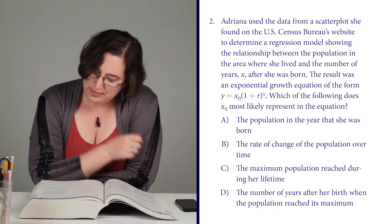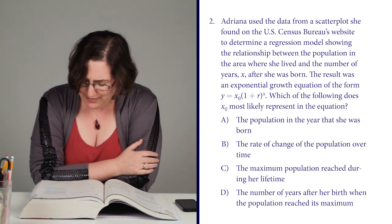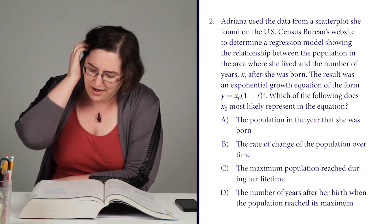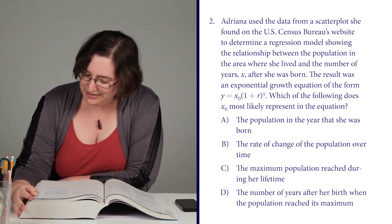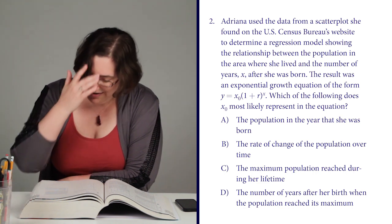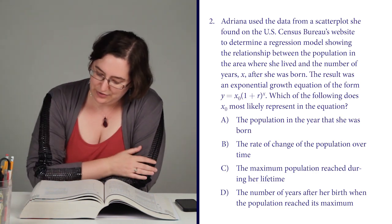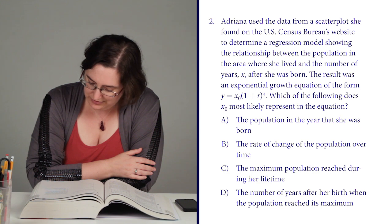Adriana used the data from a scatterplot she found on the U.S. Census Bureau's website to determine a regression model showing the relationship between the population in the area where she lived and the number of years after she was born. The result was an exponential growth equation of the form y equals x sub zero times 1 plus r to the x.